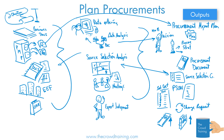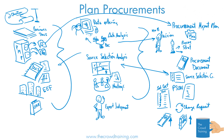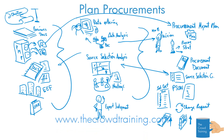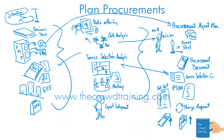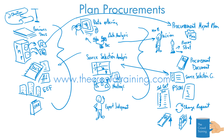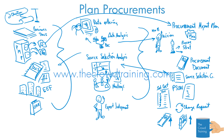As you can see, there's quite a lot of outputs, but really we're just trying to determine what the plans are. Every time we need to procure more things, we might go through this process as many times as necessary. We might not have all these outputs, but most likely we will. That is a quick review of the plan procurements process in the 6th edition PMBOK from Hear the Crowd training. Thank you.